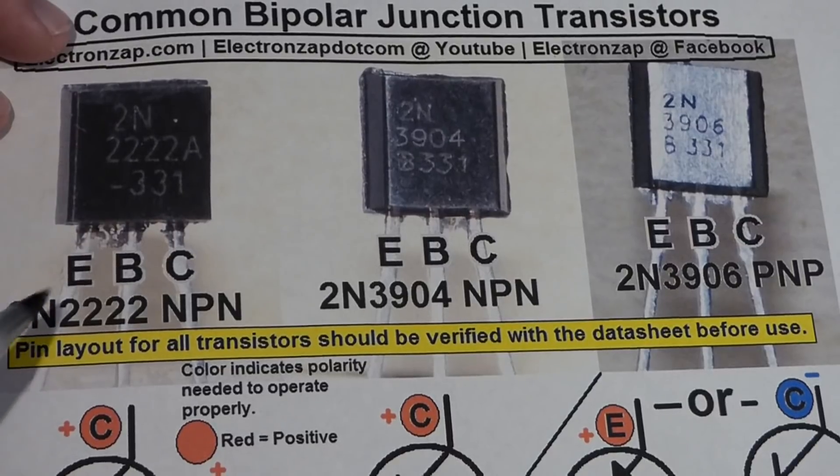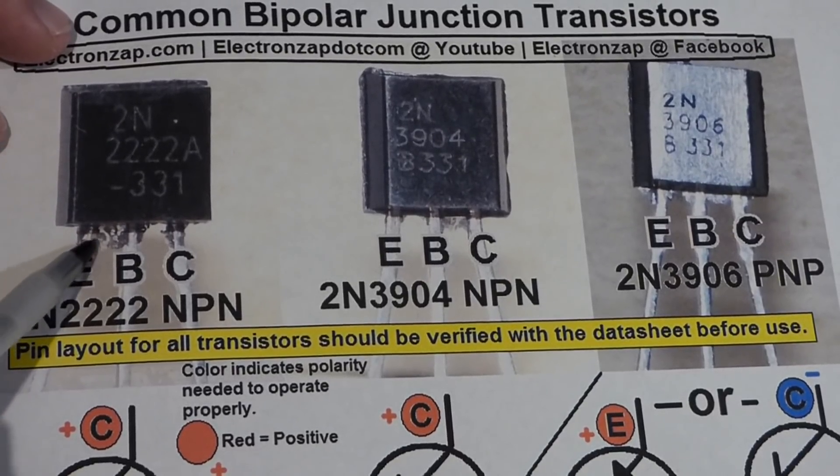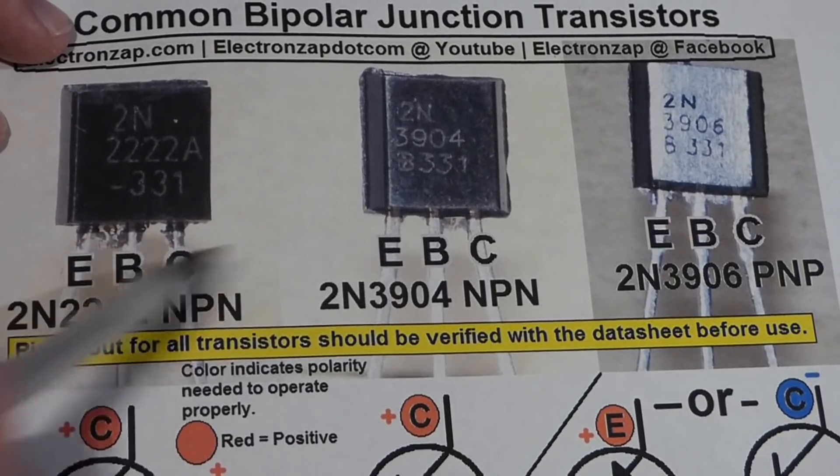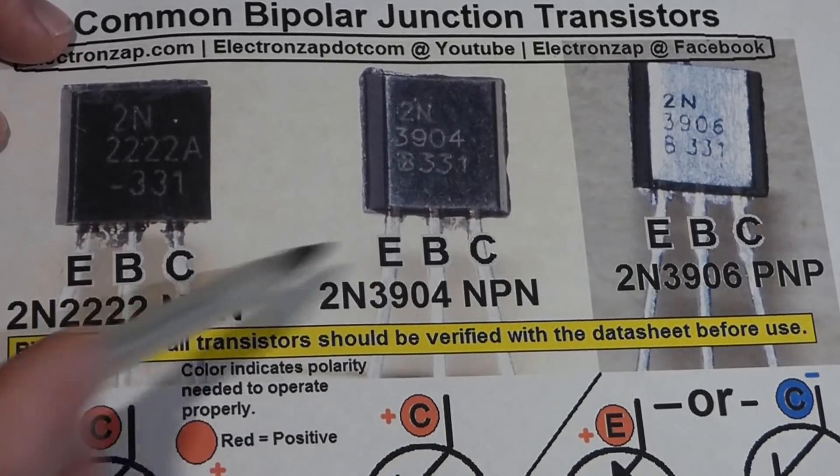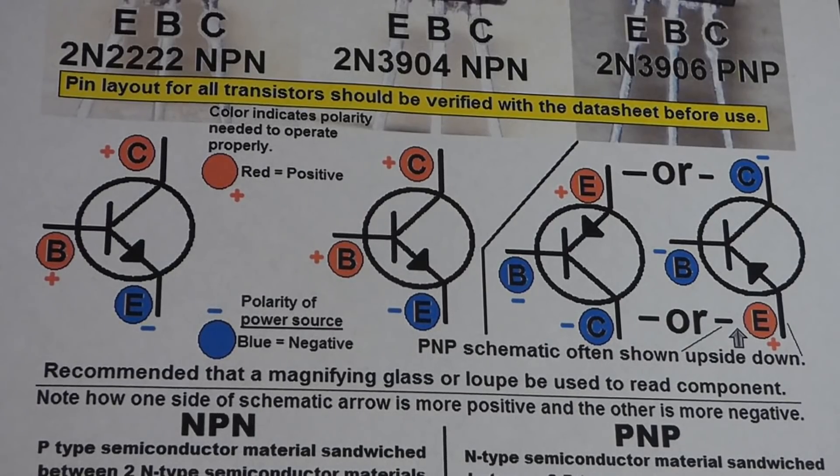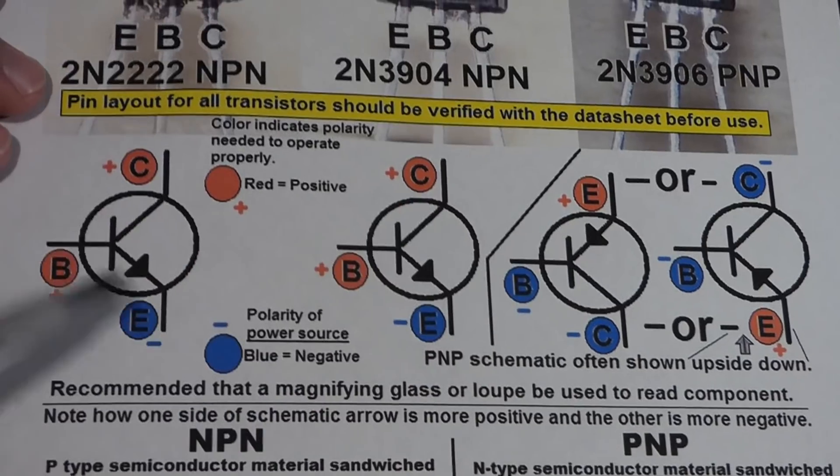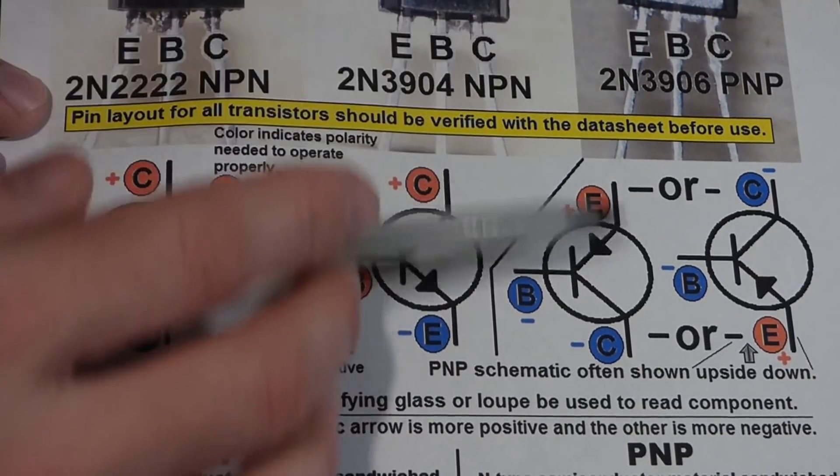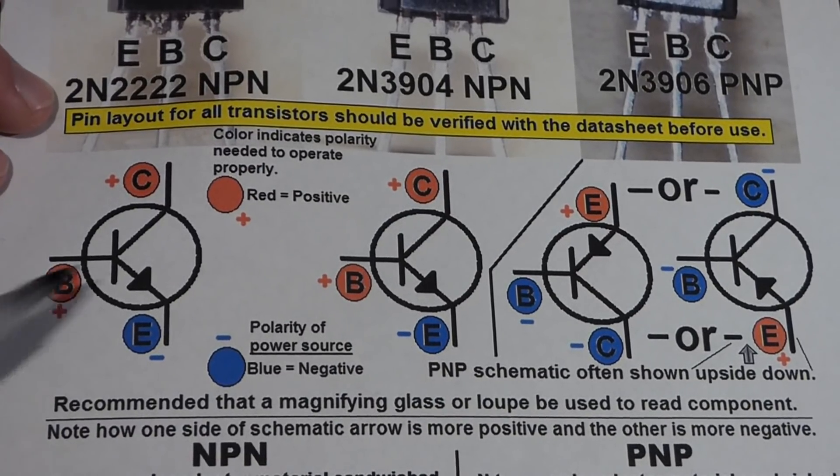But, if it starts with 2N, you can be pretty sure that looking at the flat edge, the left pin is the emitter, the middle pin is the base, and the right pin is the collector. And, moving down the diagram, I have the schematic symbols again. Each one of these symbols is for the transistor above it. I have two here. I'll explain why coming up.